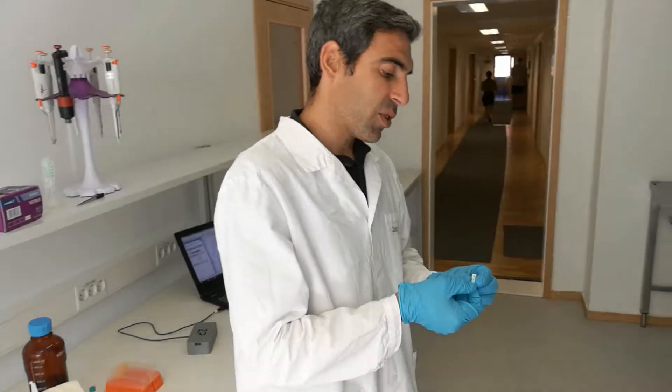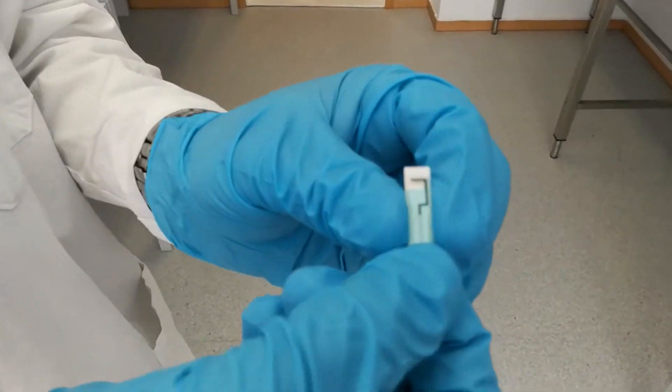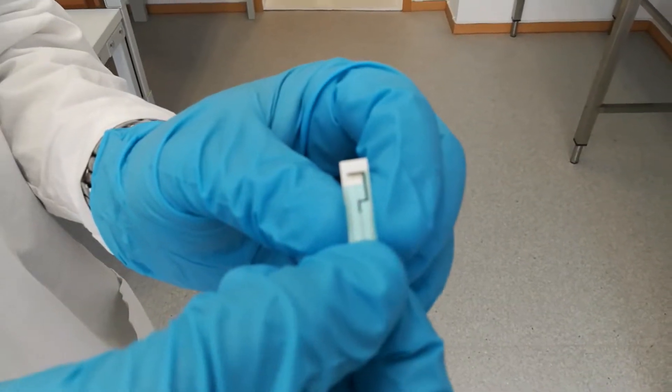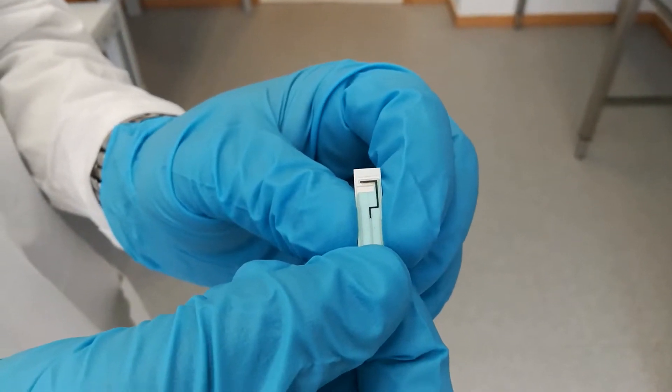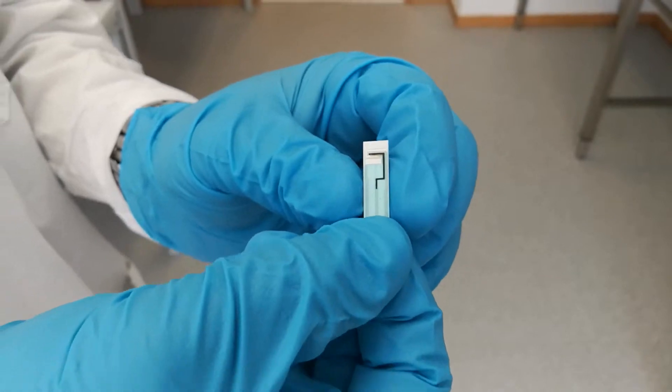At this moment I'm going to demonstrate how we test our glucose sensors. As you can see here, there's a formulation dispensed on the platinum working electrode, the dark electrode, whereas our counter and reference electrodes are made of silver-silver chloride.